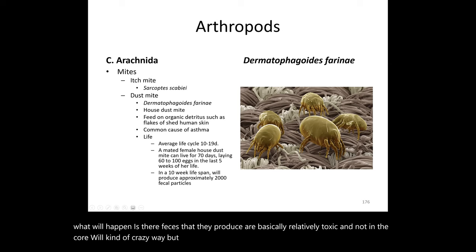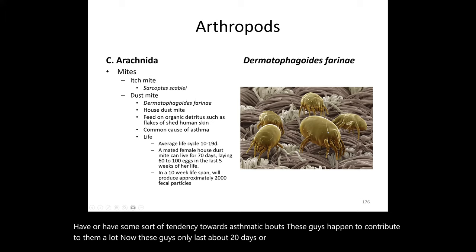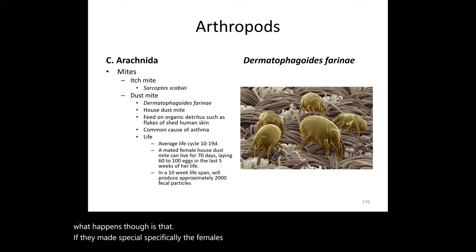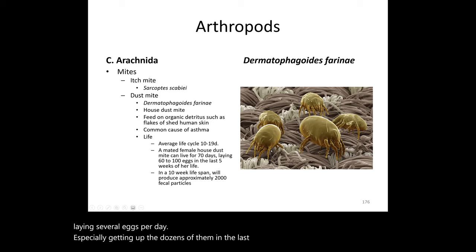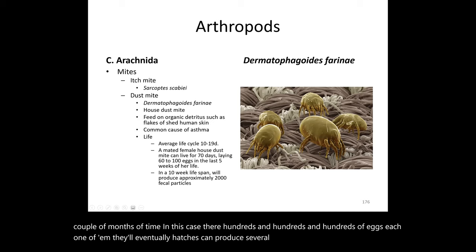Dust mite feces are one of the bigger triggers of asthma, especially for people with a tendency toward asthmatic episodes. Their life cycle lasts about 20 days, but mated females can live for a couple of months, laying dozens of eggs per day — especially in the final days of their life cycle. Within a few months, hundreds of eggs each produce several thousand fecal particles, contributing to contaminated air.